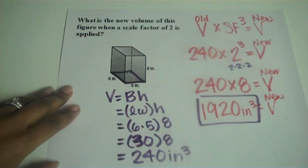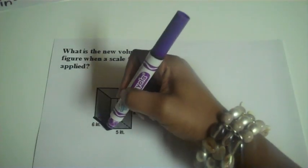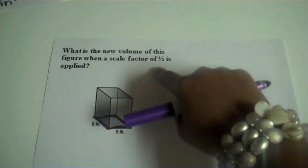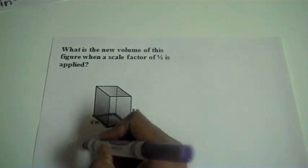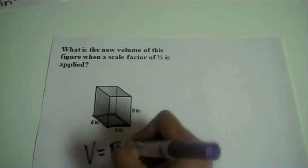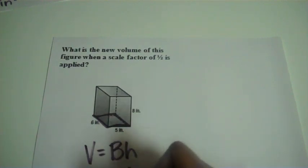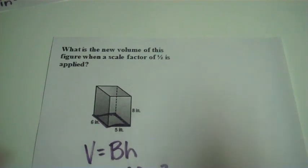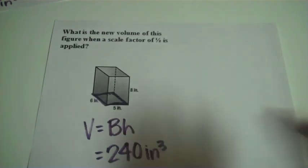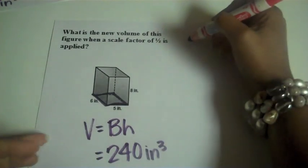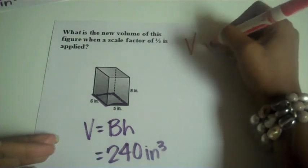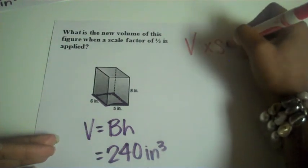Let's go ahead and take a look at example number 2. Alright, so we have the same rectangular prism here. And this time we are applying a scale factor of 1 half. So we just worked out the volume of this figure, so I'm not going to work it out again. It was 240 inches cubed.